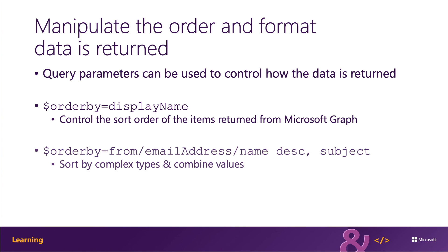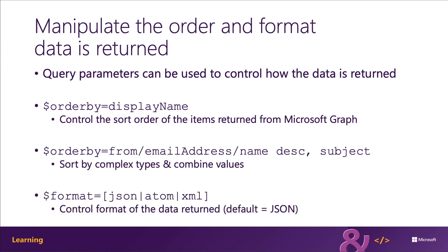Complex fields can also be sorted. Complex types, such as the from field in an email message, is a complex type of an email address that contains the name and address property. To sort by name, you should use from/emailAddress/name. By default, responses to Microsoft Graph are returned in JSON format. However, you can request data in two other formats, XML and Atom, by adding the format parameter.